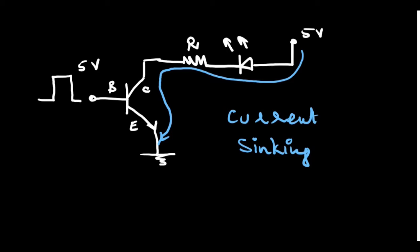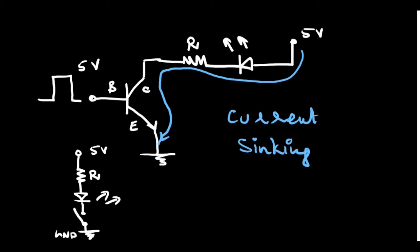Let us try to replace it with a switch. We have the 5-volt supply, a current limiting resistor for the LED, and the light emitting diode. I will use a switch here, and the other end of the switch I connect to ground. Now what is happening? The load is getting the ground through the switch, and when the switch is closed, current flows into the switch. This is what is current sinking.